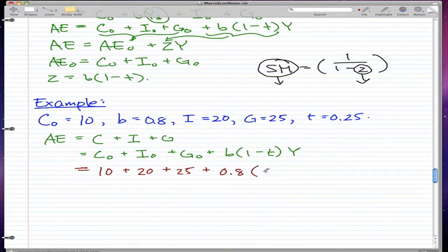So 1 minus 0.25 is 0.75 times Y. And I want to mention that 0.75 means that 75% is kept by consumers. Since the government only taxed us 25% of our earned income, we keep the other 75%.